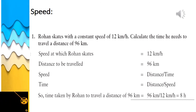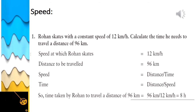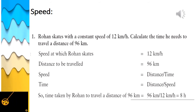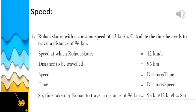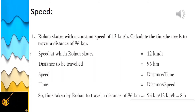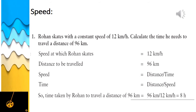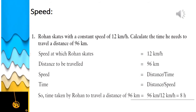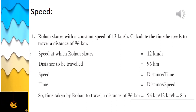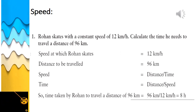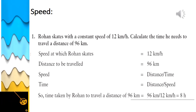We know the formula: speed = distance / time. Rearranging, time = distance / speed. Substituting the values, the time taken by Rohan to travel a distance of 96 kilometers is equal to 8 hours.